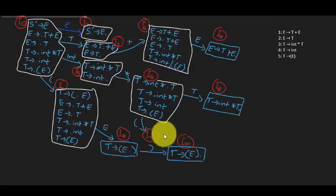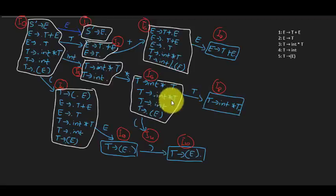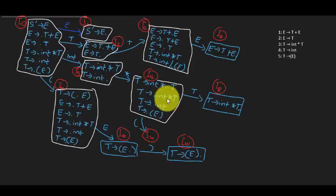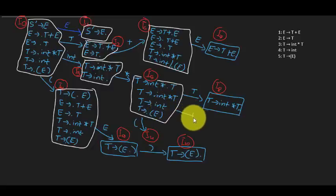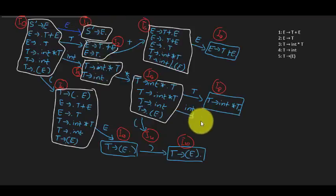After numbering all the states, we still need to check remaining transitions. For states where we move the dot after int, if we can spot an already-computed state that looks similar — where the dot is before a star — we just point to that state, called I3, rather than recomputing.